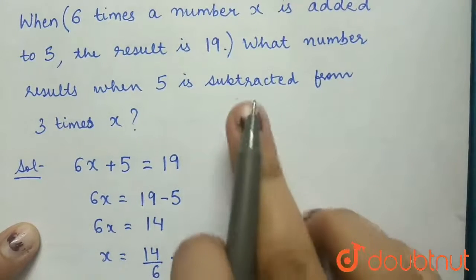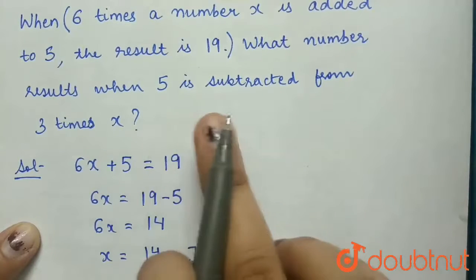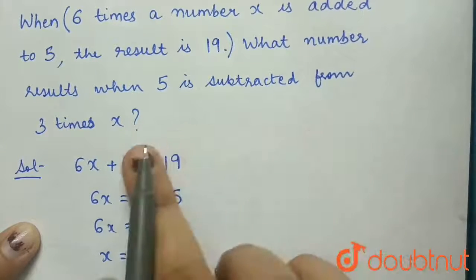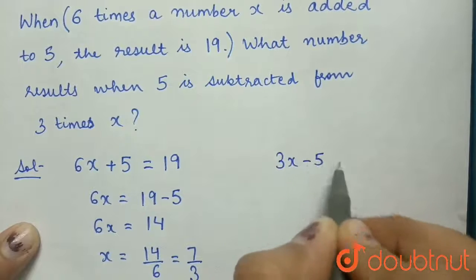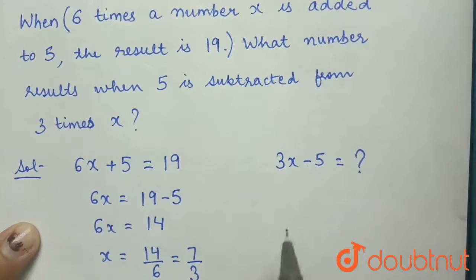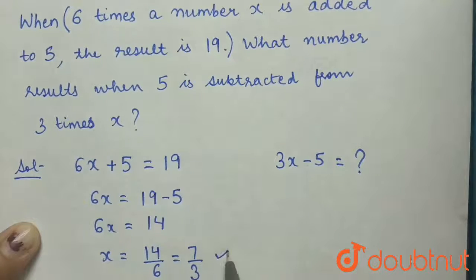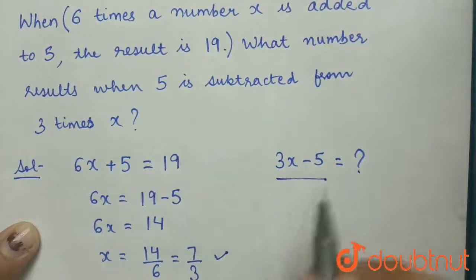Now our question says, what number results when 5 is subtracted from 3 times x? That is, 3x minus 5 we have to calculate. Now, putting the value of x, 7 by 3, in this expression,